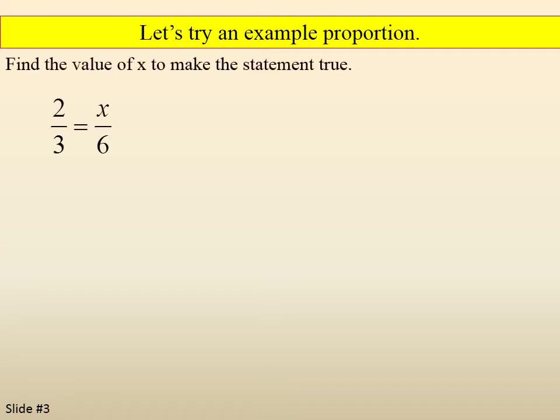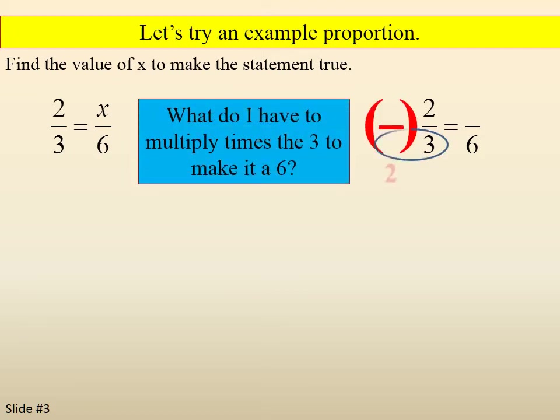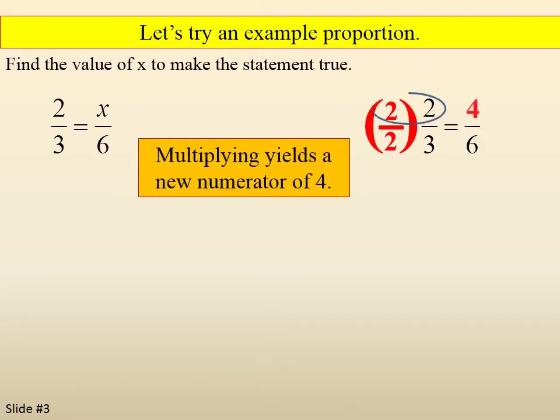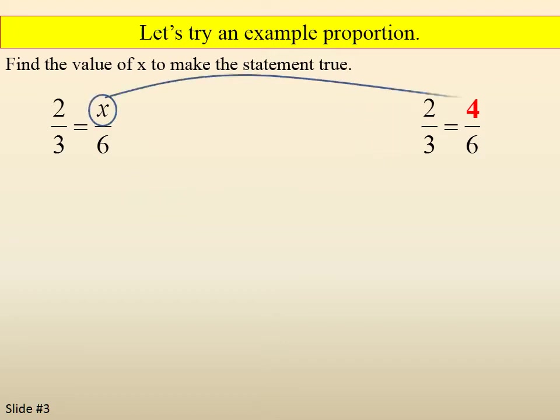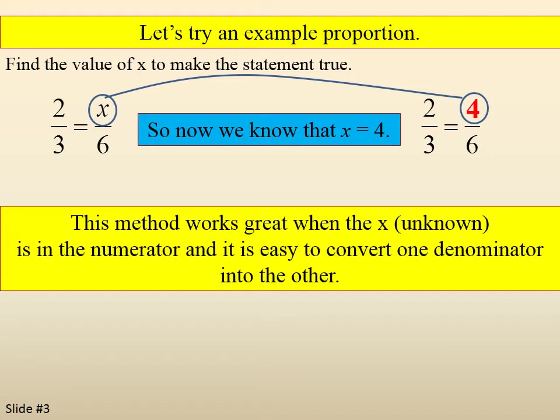Let's try an example proportion. Find the value of x to make the statement true: 2/3 = x/6. If we think of this as converting two-thirds to a new fraction with a denominator of 6, we figure out what to multiply times the 3 to make 6, which is 2. We put the same thing in the numerator and multiply to get 4. So x equals 4. This method works great when the unknown is in the numerator and it's easy to convert one denominator into the other.